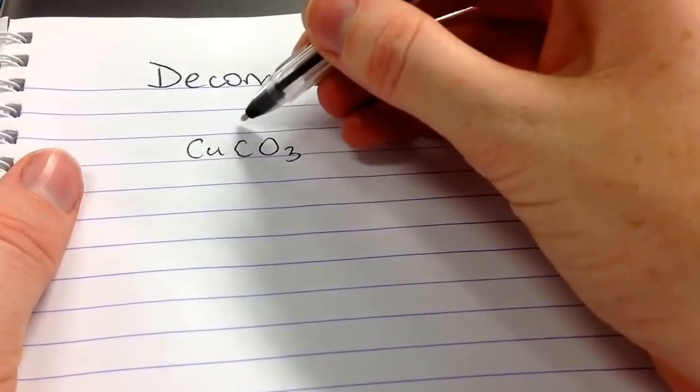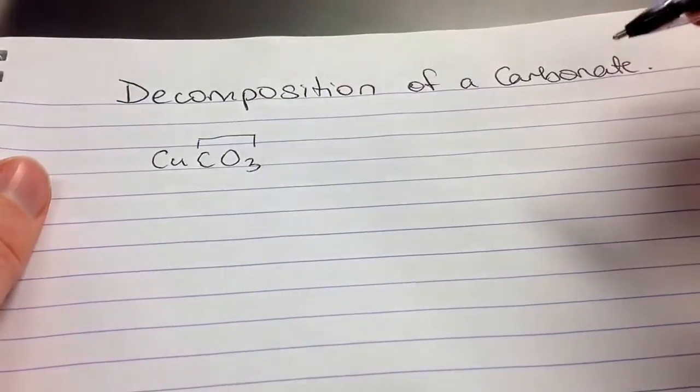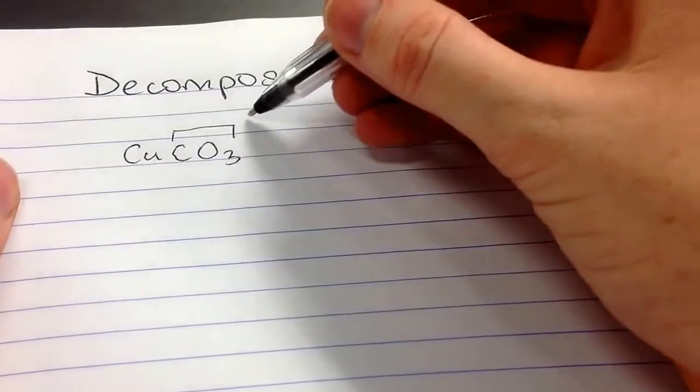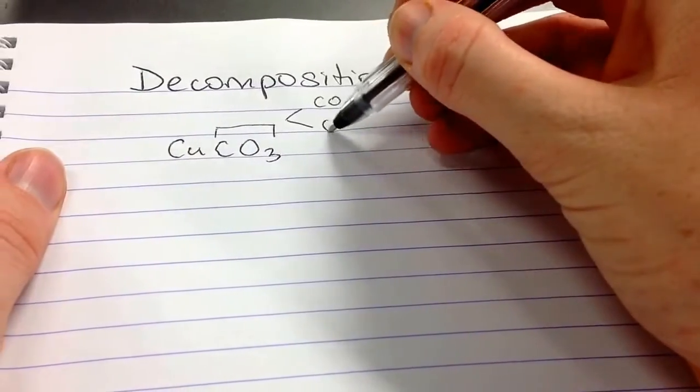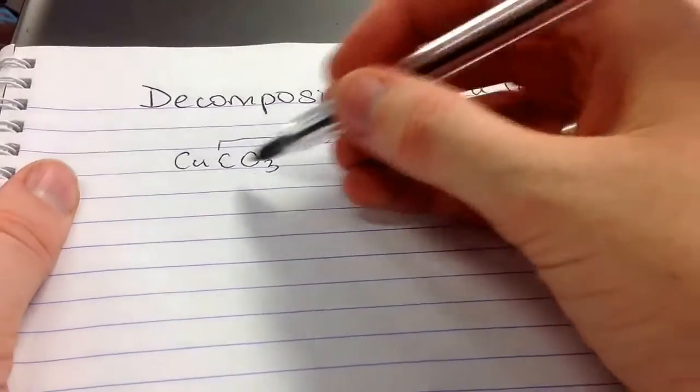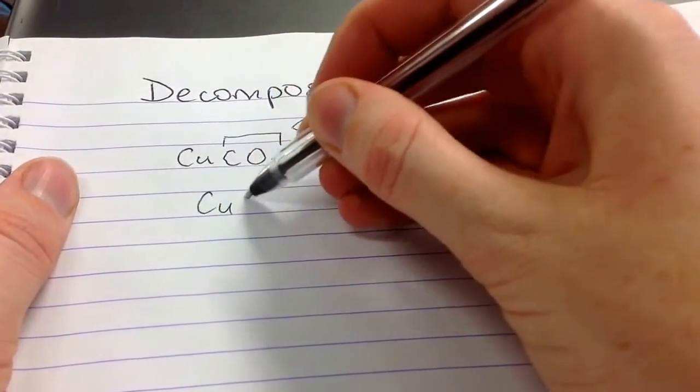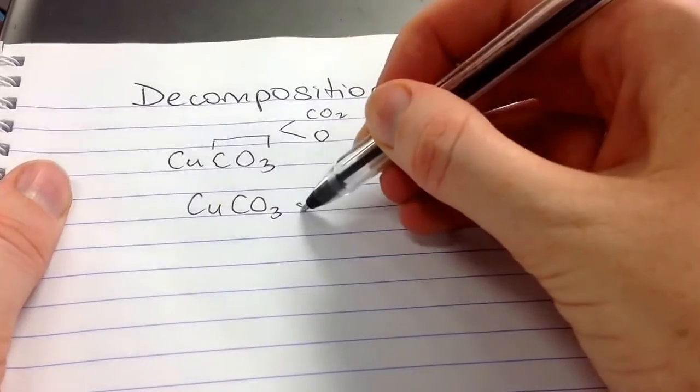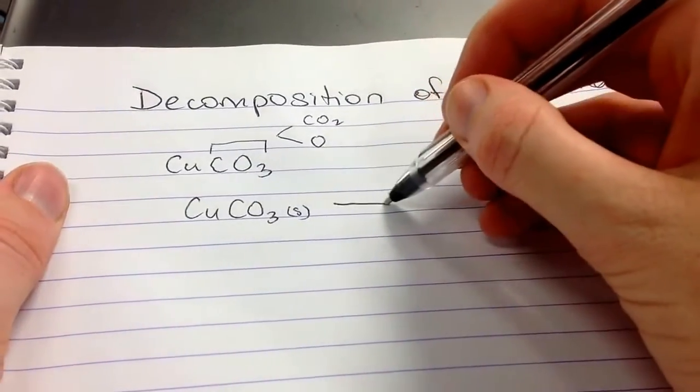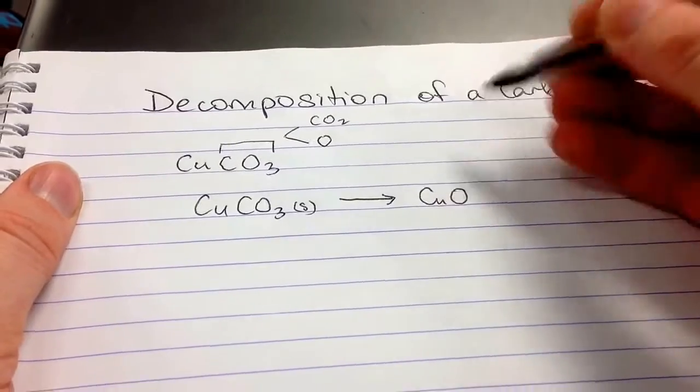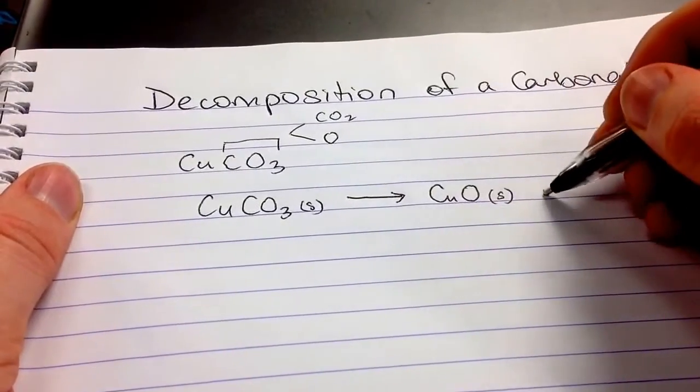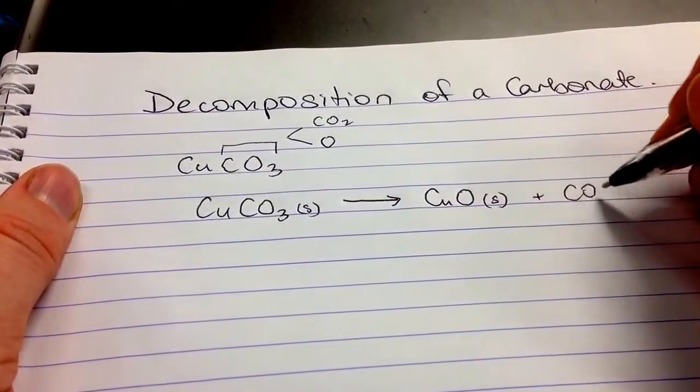Remember that the carbonate is a polyatomic ion. But it can be broken up into carbon dioxide and leaving an oxygen behind. So in this reaction, we see copper carbonate, a solid being decomposed into copper oxide, another solid, and it releases carbon dioxide gas.